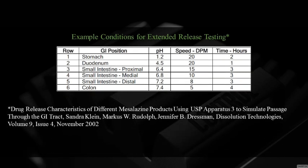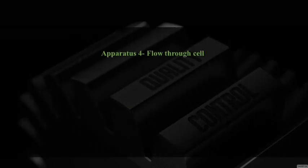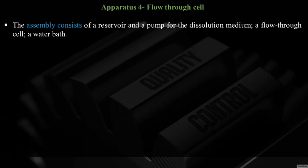Example: drug release characteristics of different mesalazine products using USP Apparatus 3 to simulate passage through the GI tract. Six different pH values are maintained in six rows — Row 1: pH 1.2 (stomach) at dip speed 20 for 2 hours; Row 2: pH 4.5 (duodenum) at dip speed 20 for 1 hour; Row 3: pH 6.4 (proximal small intestine) at dip speed 15 for 3 hours — and so on through all six rows.